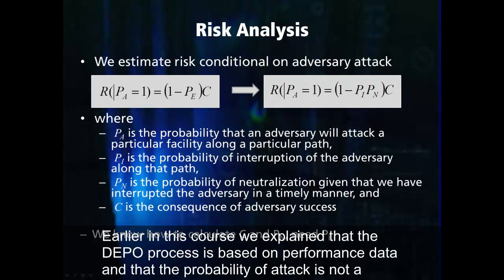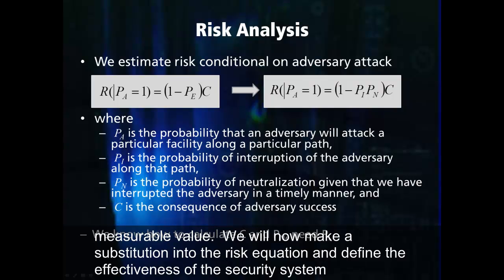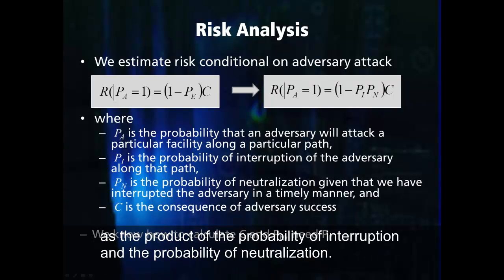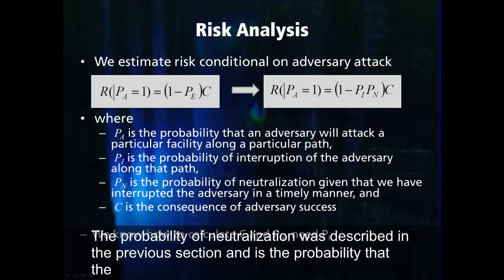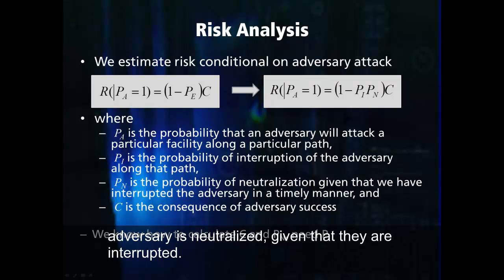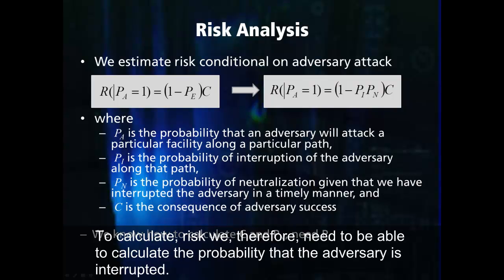Earlier in this course we explained that the DEPO process is based on performance data and that the probability of attack is not a measurable value. We will now make a substitution to the risk equation and define the effectiveness of the security system as the product of the probability of interruption and the probability of neutralization. The probability of neutralization was described in the previous section and is the probability that the adversary is neutralized given that they are interrupted. To calculate risk we therefore need to be able to calculate the probability that the adversary is interrupted.